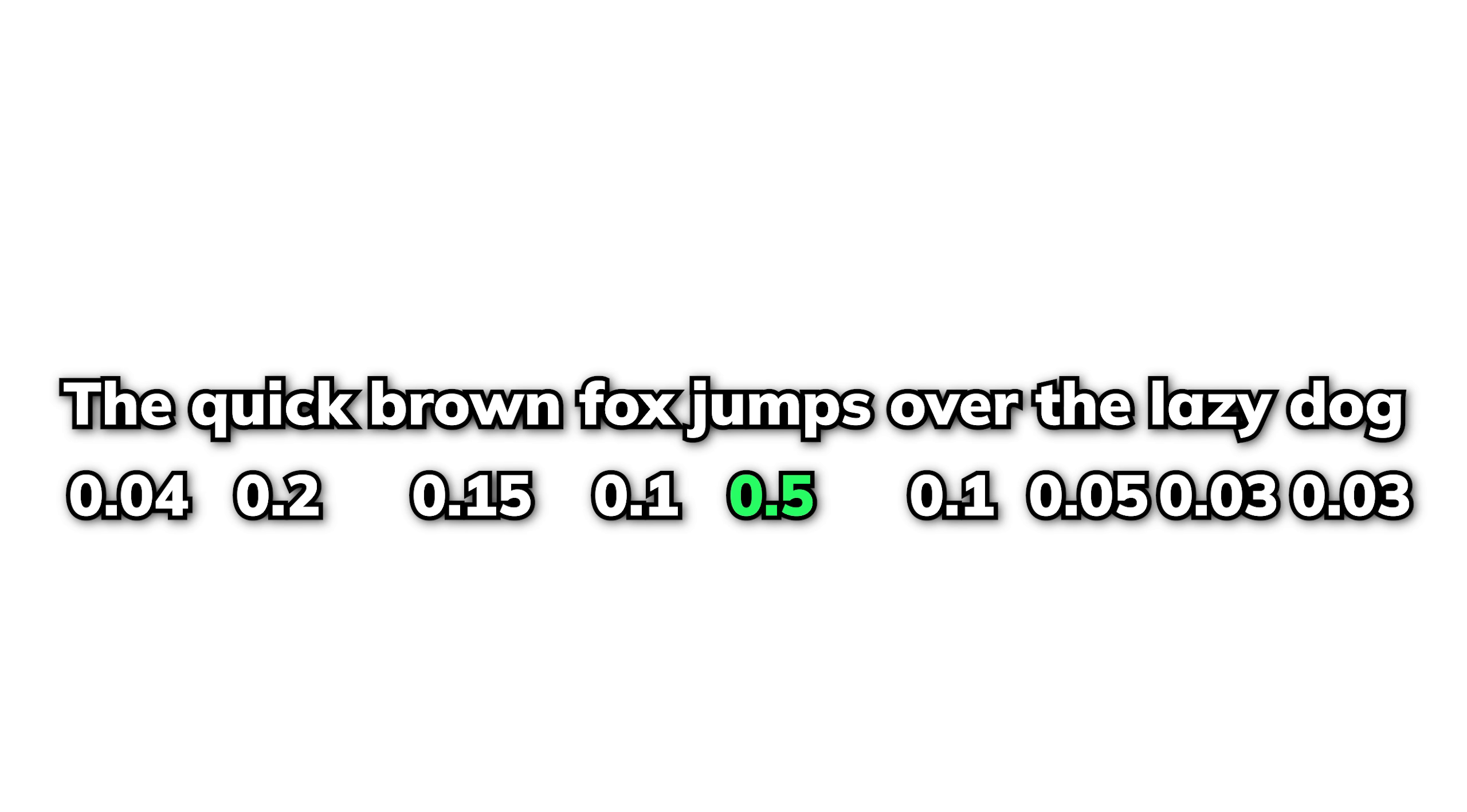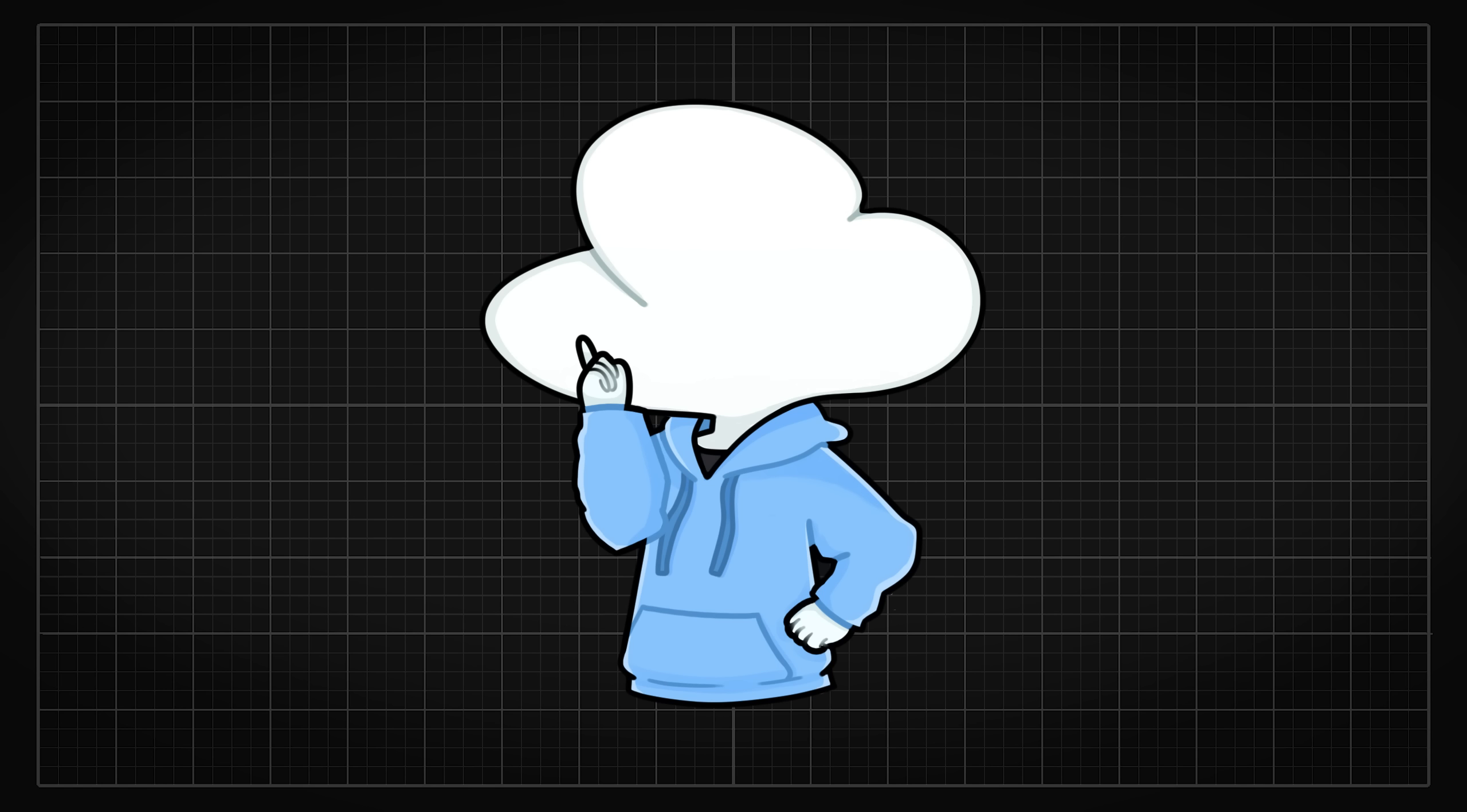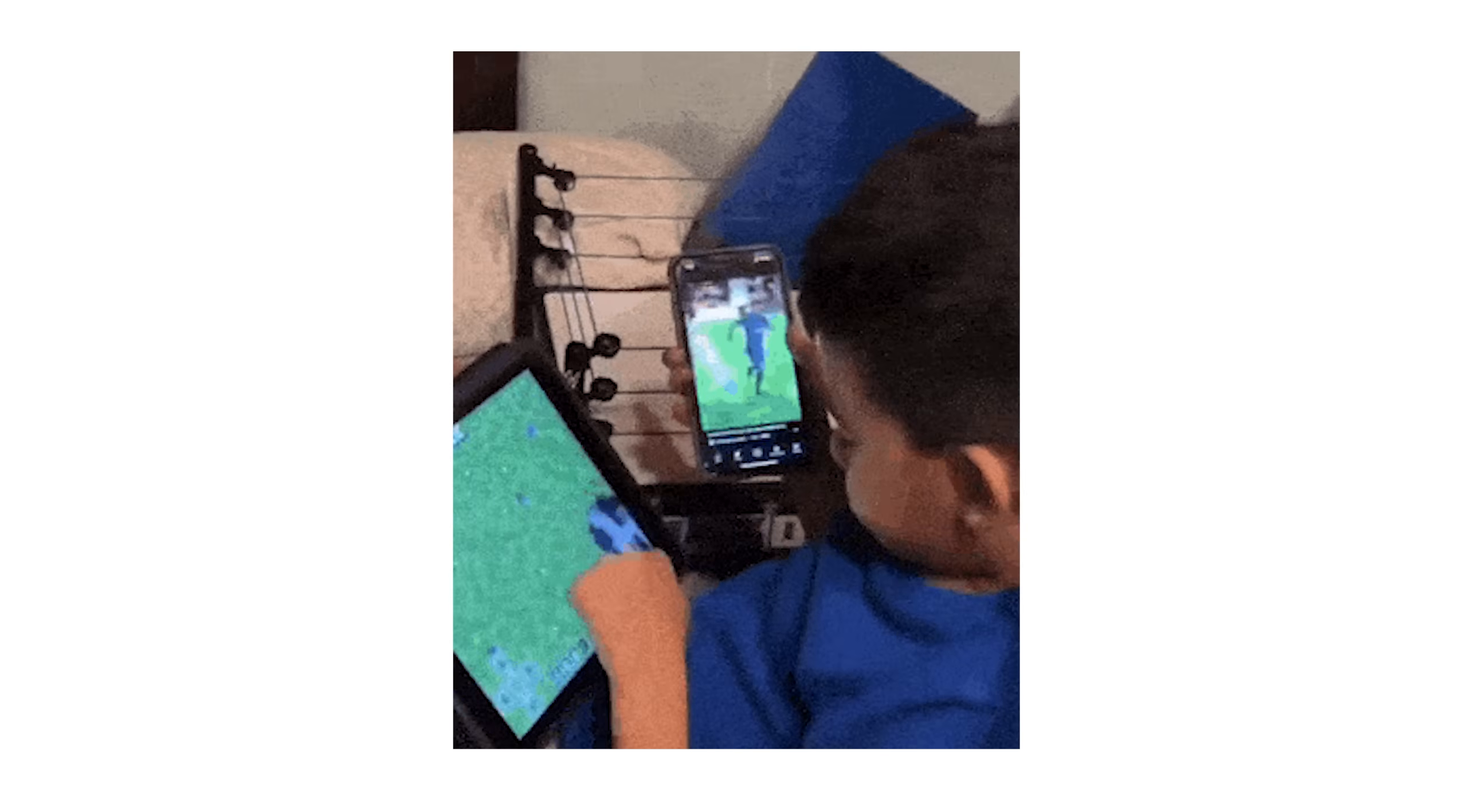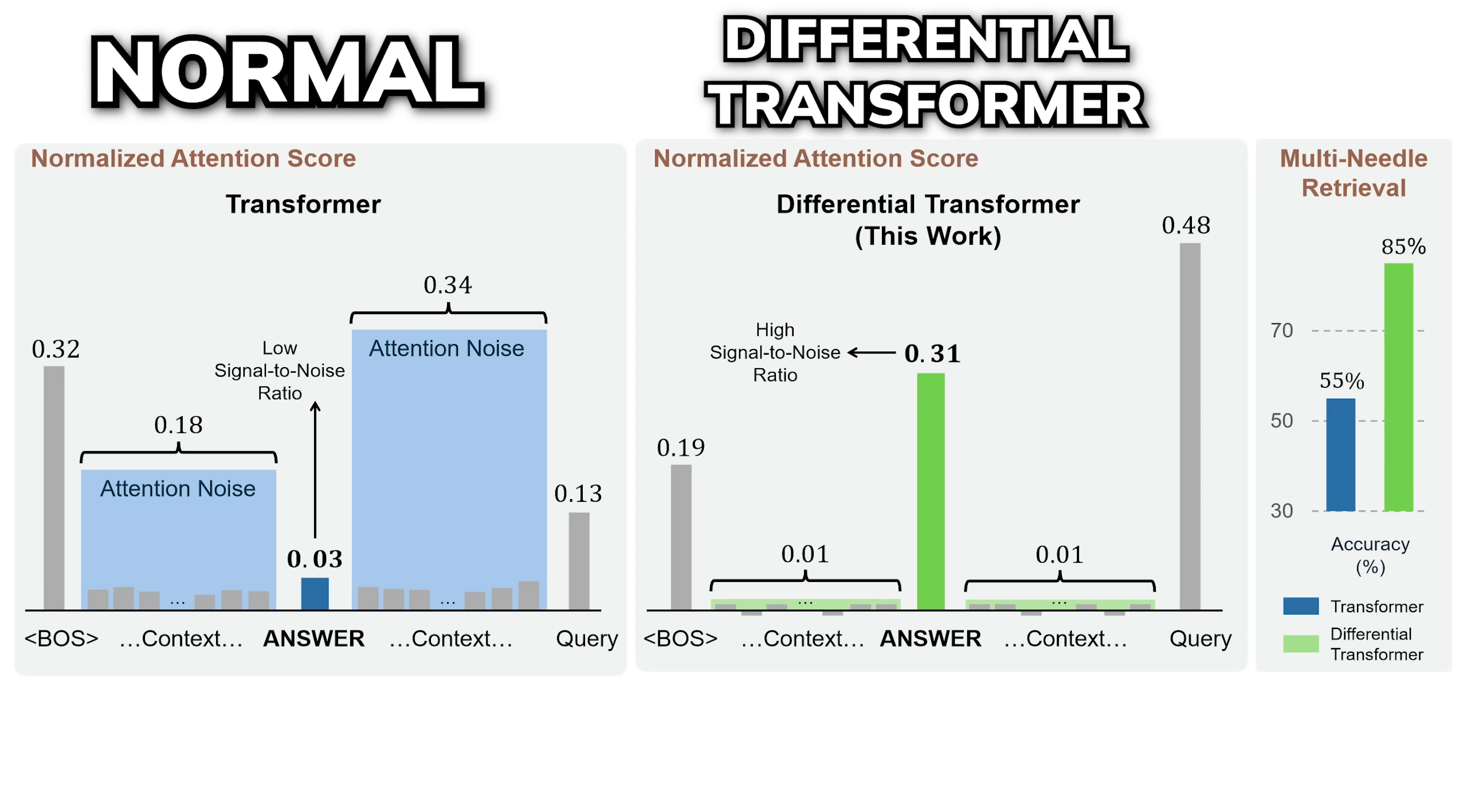You see, even if attention mechanisms become more efficient, bad attention would still lead to bad results. And one of the problems right now is that the irrelevant attention scores, which are the information the model isn't supposed to pay attention to, can still distract the model. Since irrelevant information would still add up, it can become quite large compared to the specific token the model is supposed to focus on. And this would distract the model from focusing on the correct answer. The authors call these irrelevant scores attention noise, which basically dilutes the model's ability to identify key information.